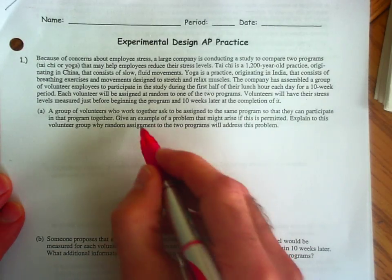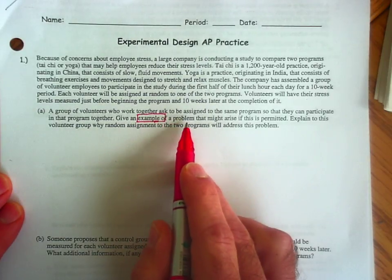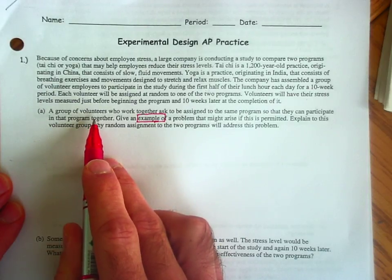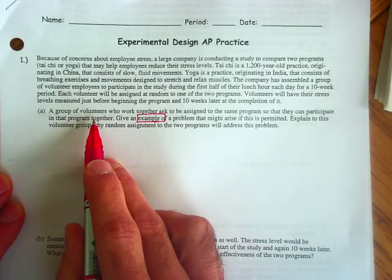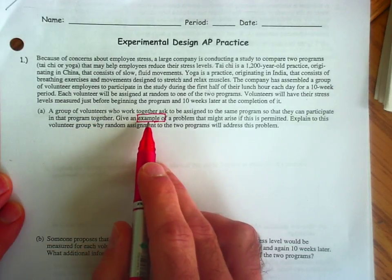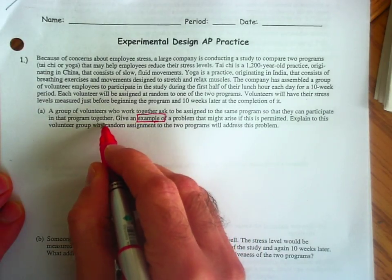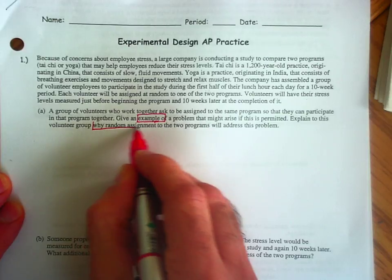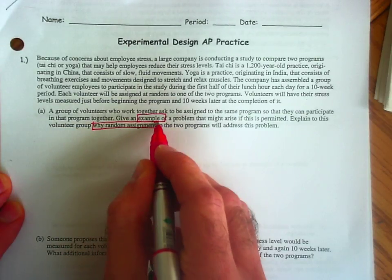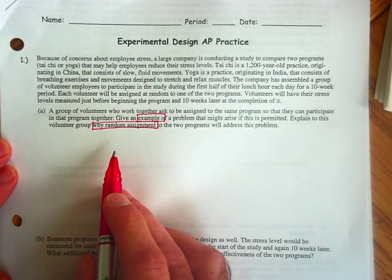The question says give an example of a problem that might arise if volunteers are permitted to choose the program in which they participate so that volunteers can work together. So you have to give a specific example, and then you must also specifically explain why random assignment will take care of this problem.